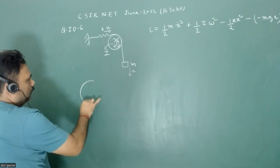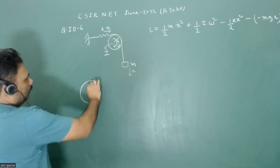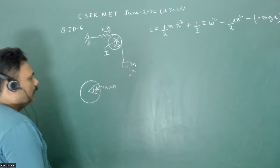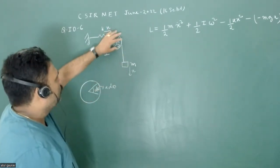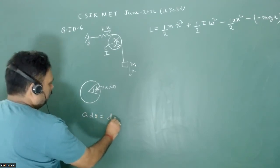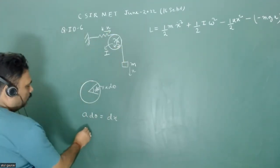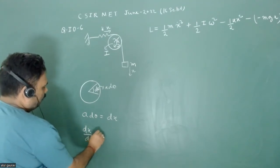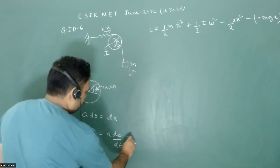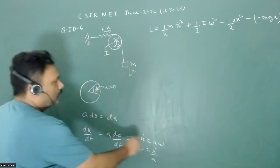Now we calculate omega. If the pulley rotates through angle d-theta, the arc length is a·d-theta. Since the wire does not slip on the pulley — rolling without slipping — we have a·d-theta = dx. Differentiating: x-dot = a·omega, so omega = x-dot / a.